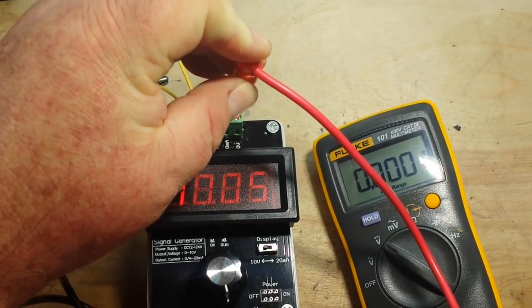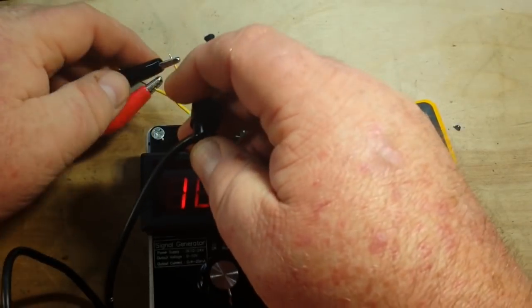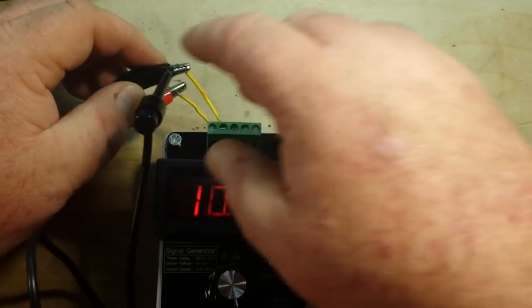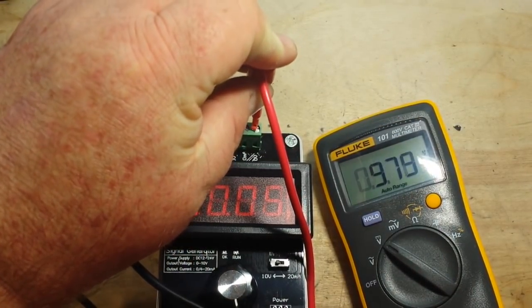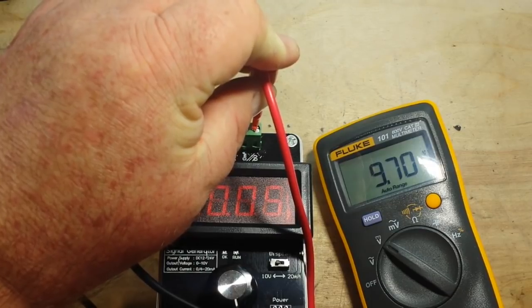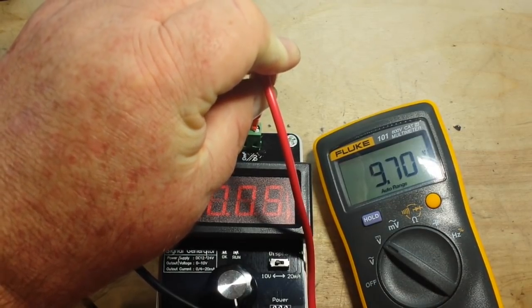All right. So outputting 10 volts there. If I go to the voltage output, which is this one here, we should see about 10 volts. Lost my ground. There we go. I said 10 volts. 9.7 on the Fluke. So that is a little bit off there.